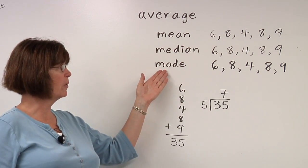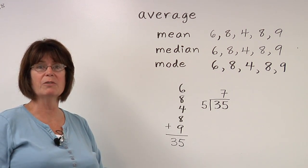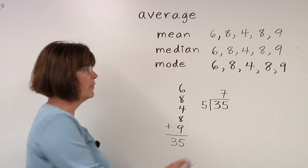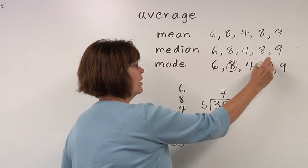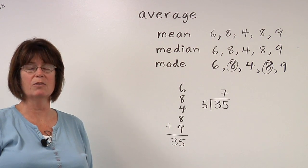To figure out the mode, we simply need to look for the most popular piece of data, the one that occurs the most often, which is 8. 8 occurs twice more than any of the other pieces, so 8 is the mode.